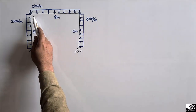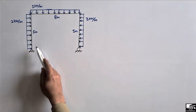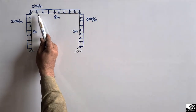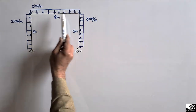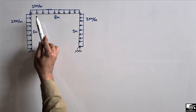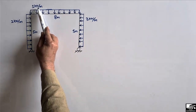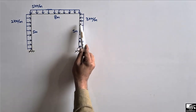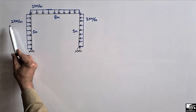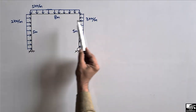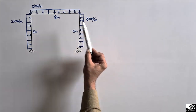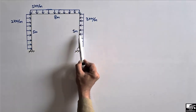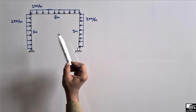This frame consists of one beam and two columns, and it has been loaded with uniformly distributed load over all its structural members. The beam is loaded with 5 kN/m, the two vertical columns are loaded with 2 kN/m and 3 kN/m respectively. The length of the beam is 8 meters while the two columns each have a length of 5 meters.